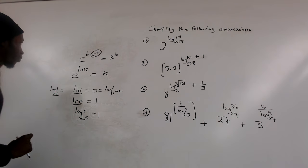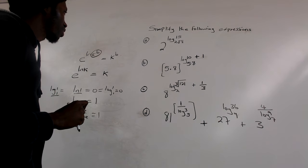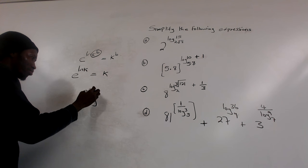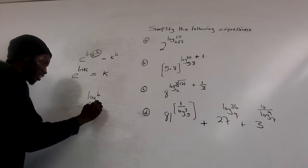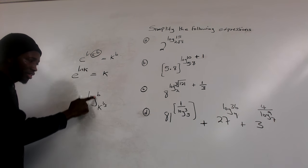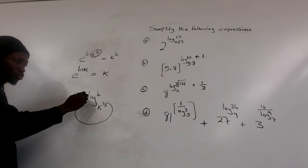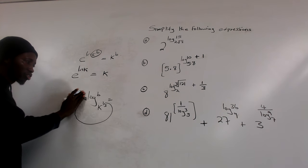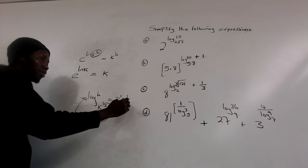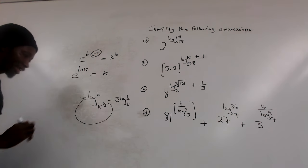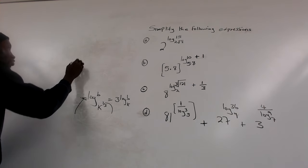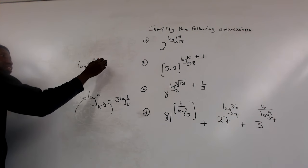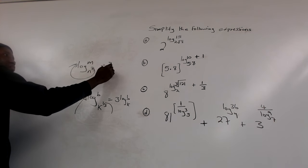Moving forward, another point to reduce steps: if we have log base b of k raised to power (1/3), this power automatically moves to become a coefficient, but as a reciprocal. Since we have 1/3 inside, it becomes 3 outside, giving us 3 log base b of k. Similarly, if we have log base n of m raised to power (7/3), when this exponent moves out as a coefficient it becomes 3/7 log base n of m.